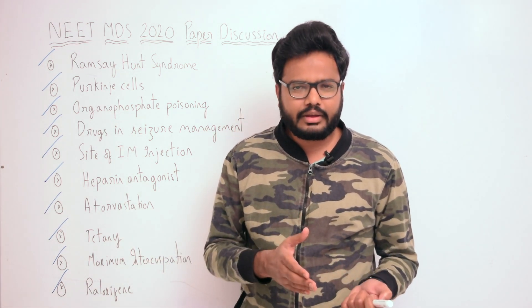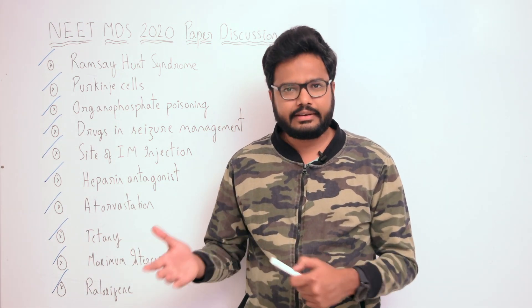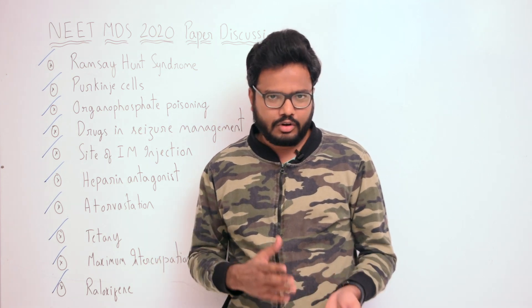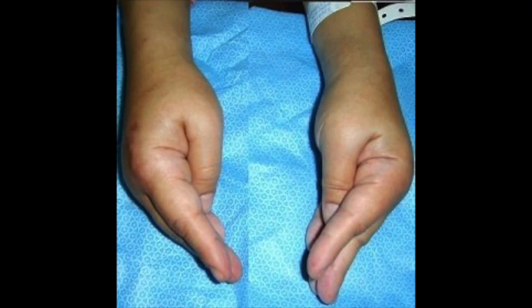Regarding tetany: hyperparathyroidism leads to hypercalcemia by decreasing the resorption of calcium from bones. Hypercalcemia causes neuromuscular hyperexcitability resulting in hypercalcemic tetany. Normally, tetany occurs when the plasma calcium level falls below 6 mg/dL from its normal value of 9.4 mg/dL.